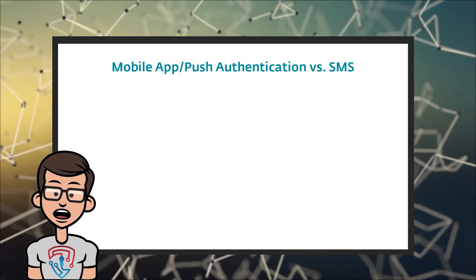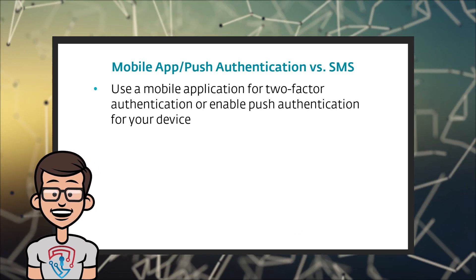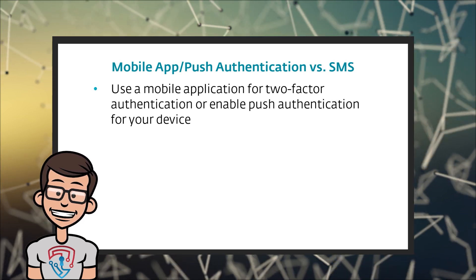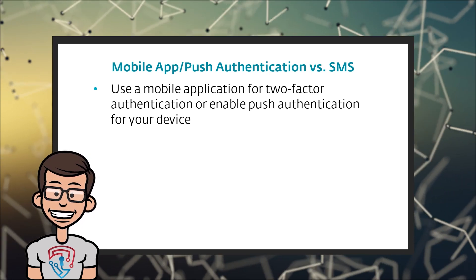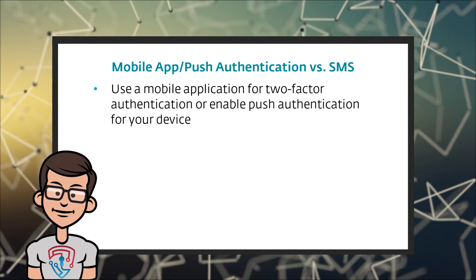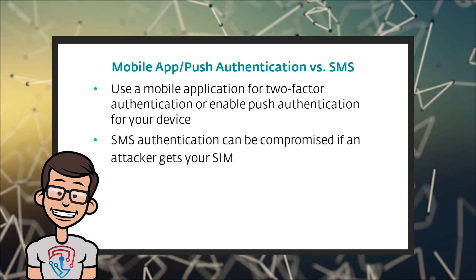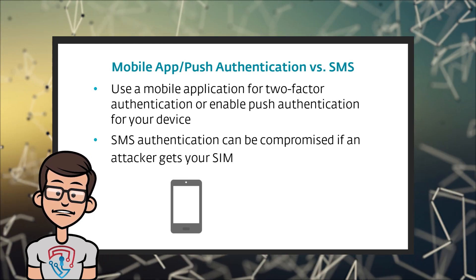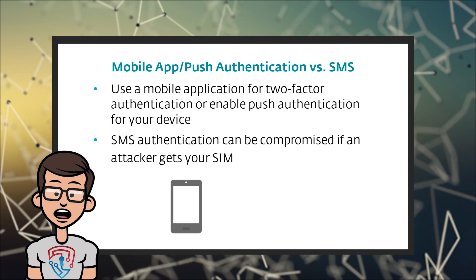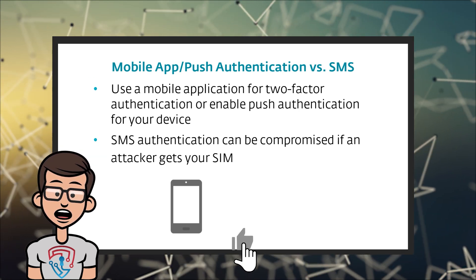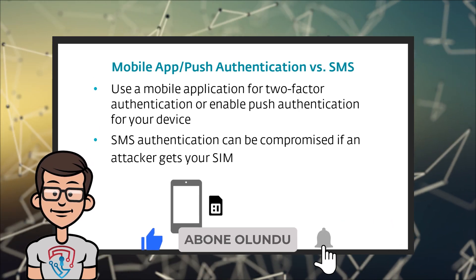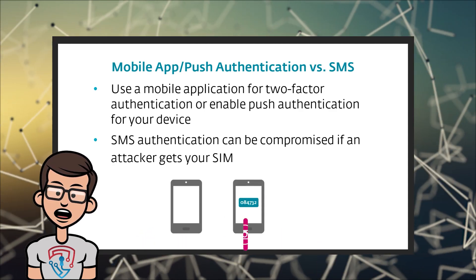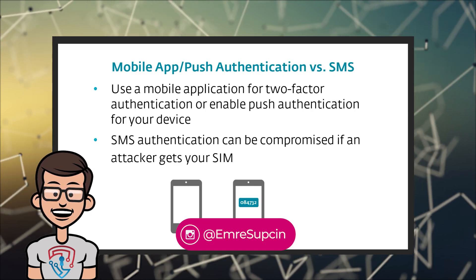When possible, use a mobile application for two-factor authentication or enable push authentication for your device. This is more secure than using SMS or text messages because SMS uses your cellular service. While not common, if an attacker gets your phone, they don't have to know your password or use your fingerprint to get the SMS one-time password. They could just take the SIM card out of the phone, plug it into another phone, and receive text messages with the one-time password to authenticate whatever account they're trying to access.